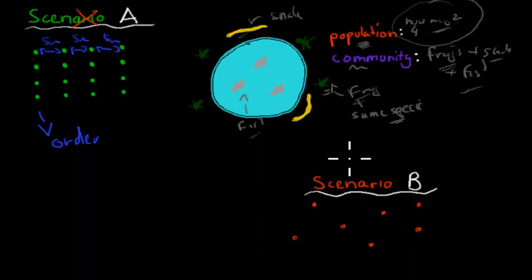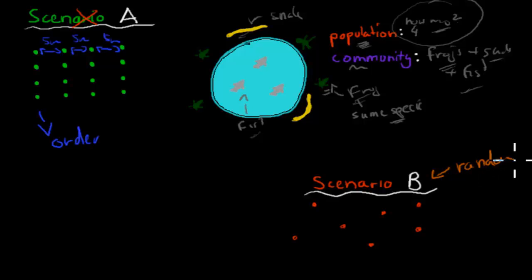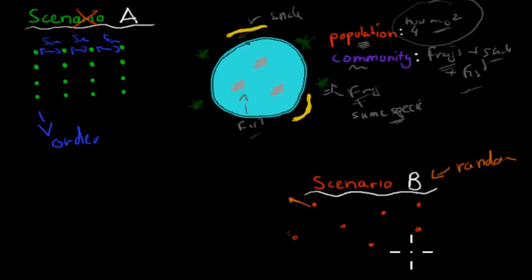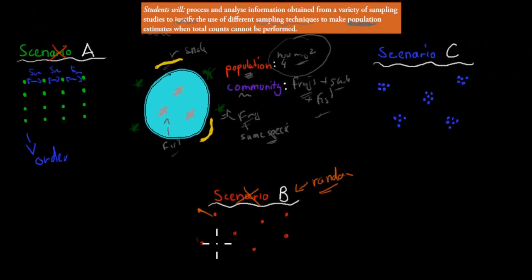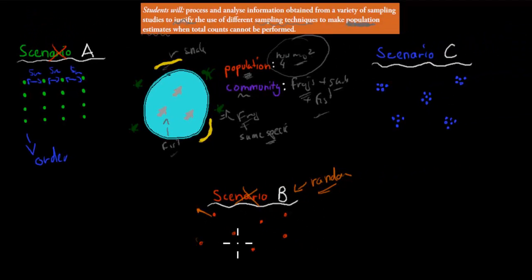Scenario B is random distribution — frogs are just anywhere, at random places. Again, this is also not usual. A random distribution is not normal either.